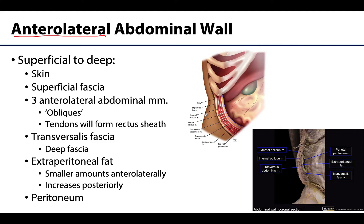Let's start on the anterior lateral abdominal wall, going superficial to deep through each layer. The most superficial layer is the skin, and deep to the skin we have the superficial fascia. The superficial fascia is variable among individuals. Inferior to the umbilicus it is more complex, with a mostly adipose layer but also a membranous portion. This deep membranous portion serves to reinforce the portion of the wall which is lacking bony support.